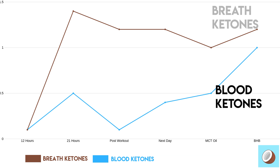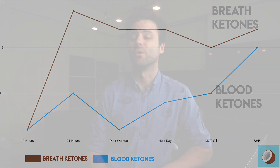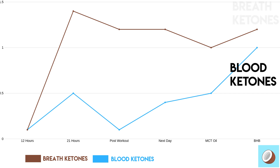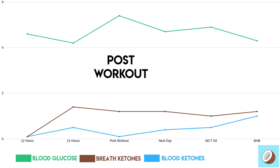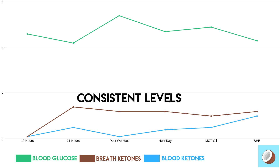Three hours later, I attempted to spike those ketones using MCT oil. I took two tablespoons of MCT oil and measured one hour later. My blood ketones were at 0.5 millimoles, my breath ketones were at 1.0 millimoles, and my blood glucose was at 4.9 millimoles. Another two hours later, I tried to spike my ketones using exogenous ketones or BHB. Recorded 30 minutes after taking the BHB: 1.0 millimoles of blood ketones, 1.2 millimoles of breath ketones, and 4.3 millimoles or 78 milligrams per deciliter for blood glucose.